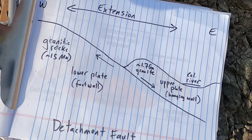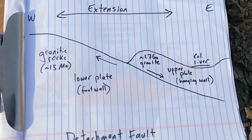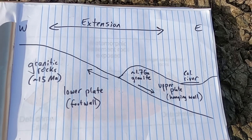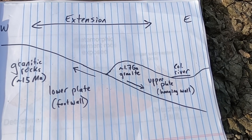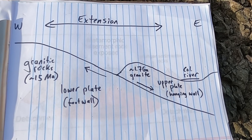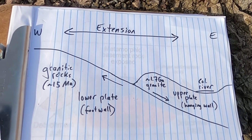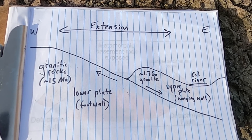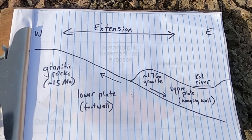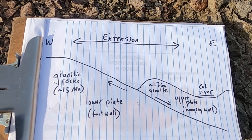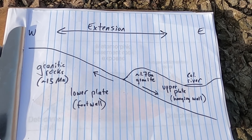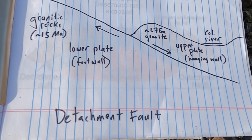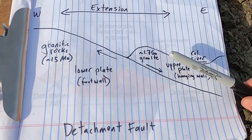This part of the southwest is known for having quite a bit of east-west extension due to the basin and range extensional event, which began about 17 or so million years ago. The crust has been stretched. When the upper portion of the crust, which is very brittle and not as hot as the lower crust, has stress exerted on it, it breaks into faults. A specific type we see is a very low angle fault called a detachment fault — a low angle normal fault caused by extension.